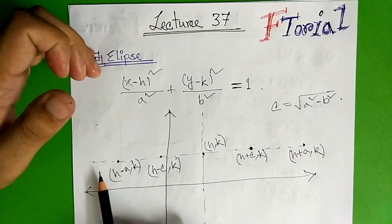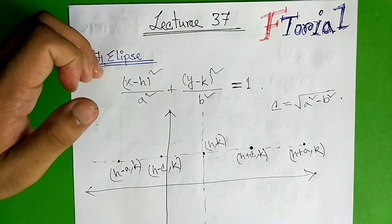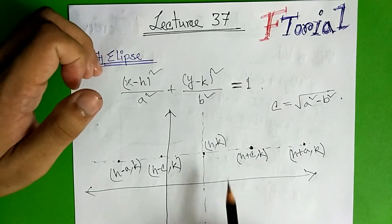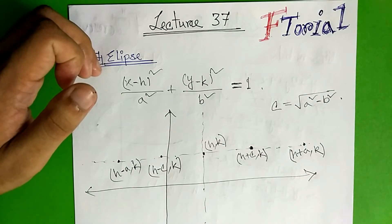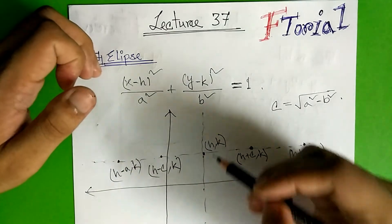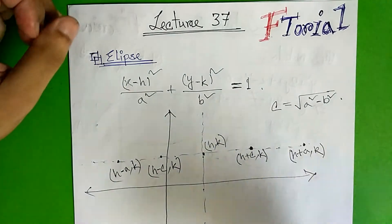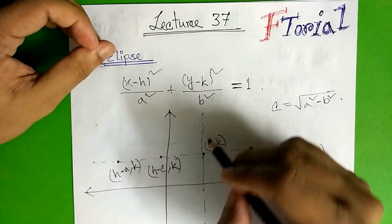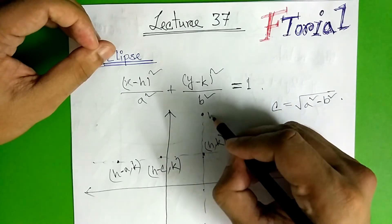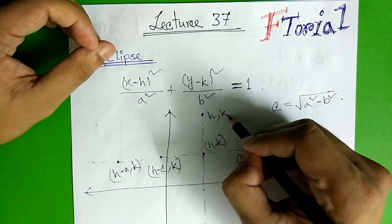So if we write B, then h will represent the Y value. We will work with H. But as we know, the y-axis is equal to b, so h is fixed and the y-axis is equal to b.